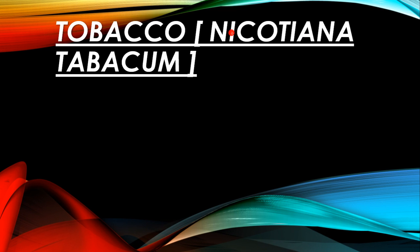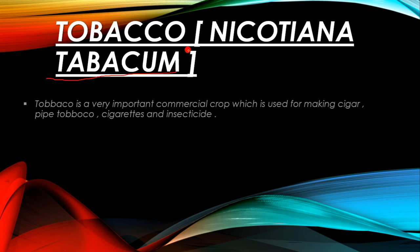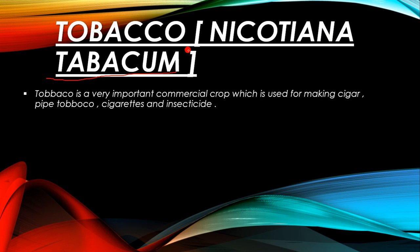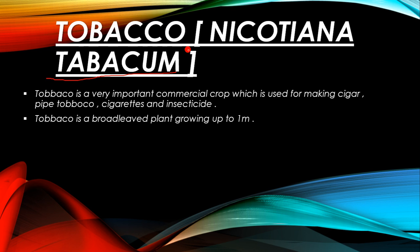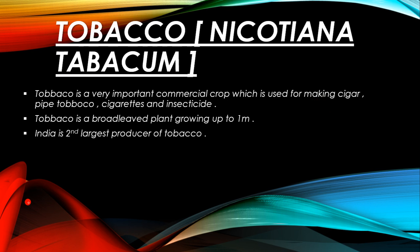Now we will talk about tobacco. The scientific name of tobacco is Nicotiana tabacum. Tobacco is a very important commercial product used for making cigars, pipe tobacco, cigarettes, and insecticides. Never smoke — smoking is injurious to health. Tobacco is a broad-leaved plant growing up to 1 meter in leaf size. India is the second largest producer of tobacco after China.